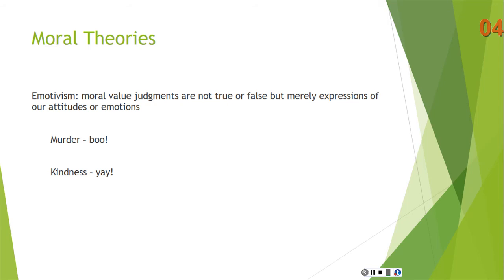Emotivism says that moral value judgments are not true or false, but merely expressions of our attitudes or emotions. When we say 'murder is wrong,' what we really mean is 'murder — boo!' It's an expression of a negative attitude about murder. And when we say 'kindness is good,' what you're saying is 'kindness — yay!' You can call this the boo-yay theory. A good way to remember emotivism is that it has the word 'emotion' in it — moral judgments are attitudes or emotions.